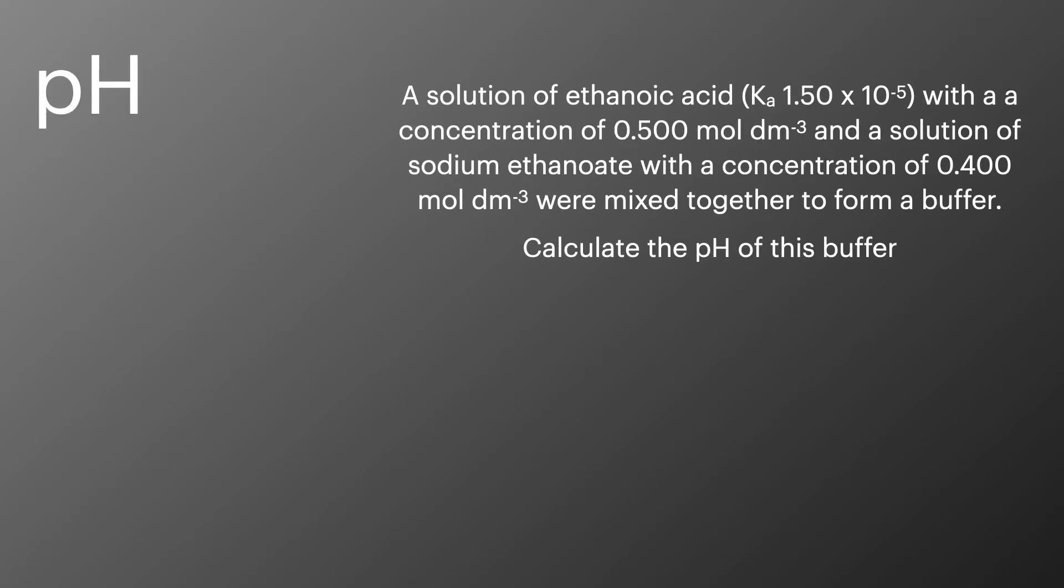We'll first start off by calculating the pH of a buffer. A solution of ethanoic acid with a concentration of 0.5 moles per decimetre cubed and a solution of sodium ethanoate with a concentration of 0.4 moles per decimetre cubed were mixed together to form the buffer. The first two equations we're going to need to use for this one is the Ka expression to get the concentration of hydrogen ions and then the pH expression to work out the pH from the concentration of hydrogen ions.